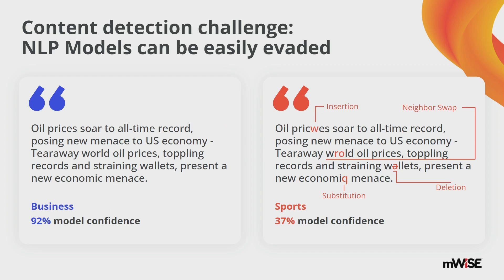How do these email defenses actually work? Every email system has content classification models that check content to confirm whether this is a phishing attack or a legitimate email. Bad actors use text manipulation to swap out words — swapping neighborhood words or changing B to D or 7 to 9 — all of which confuse content classifier models. That is the tactic of bad actors and state-sponsored adversaries.